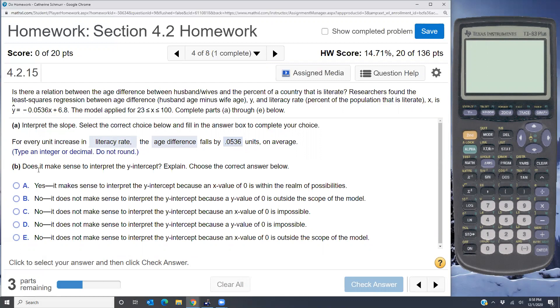Part B, does it make sense to interpret the y-intercept? Explain. Well we already know that it does not make sense for x to equal 0 because they're telling us x has to be between 23 and 100. And so I would say no, it does not make sense to interpret the y-intercept because the x value, x equals 0, is outside the scope of the model. They give us the scope of the model here, 23 to 100, so x equals 0 is not okay.